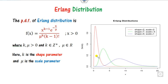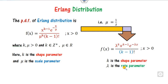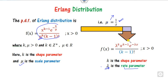We can see the graph of this density function with respect to the shape and scale parameter here. If instead of the scale parameter you consider a rate parameter denoted by lambda, the relation between mu and lambda is given here. You can substitute the value of mu and get this expression, so once you have the mean and variance you can simply replace mu as 1 by lambda.